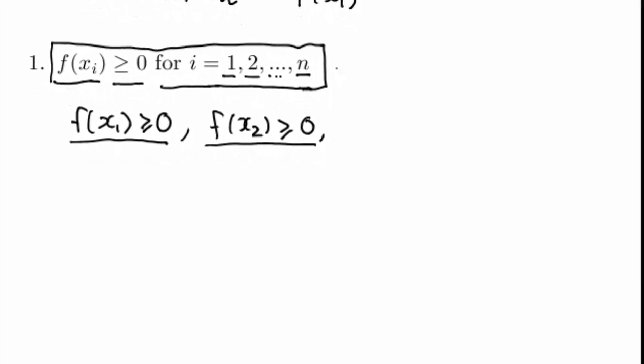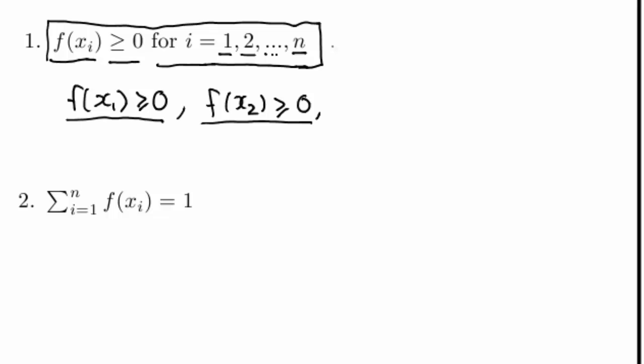The second property that the probability distribution function must satisfy is that if I sum from i equal to 1 to n, where n again is the number of possible outcomes, and I sum the probability of each outcome, then I must get the value 1, 100%. So in words what this says is that the probability of getting one of the outcomes in the range of x must be 100%.